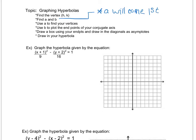We're going to use a and b to find our vertices. We will use b to plot the endpoints of our conjugate axis. Remember the conjugate axis is going to be an imaginary axis - we're not really going to draw it in. Then we'll draw a box using our endpoints and the diagonals will be our asymptotes and we'll use all that to draw in the hyperbola.